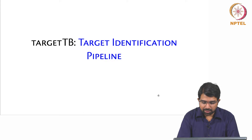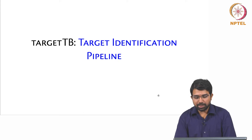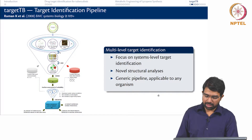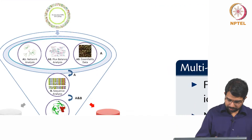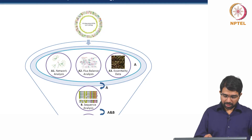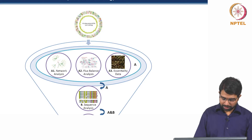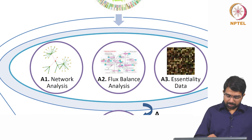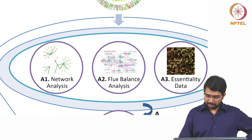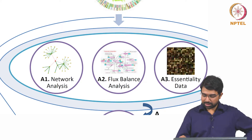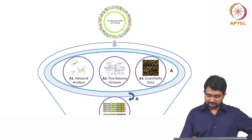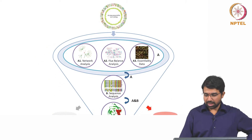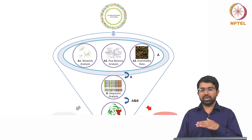What we did was build a target identification pipeline which is essentially generic and can be applied to any organism. We start with the entire genome and feed it into a filter. We do some network analysis, build protein interaction networks, do flux balance analysis, and take some essentiality data from literature, then take a union of all these to prepare a first short list.